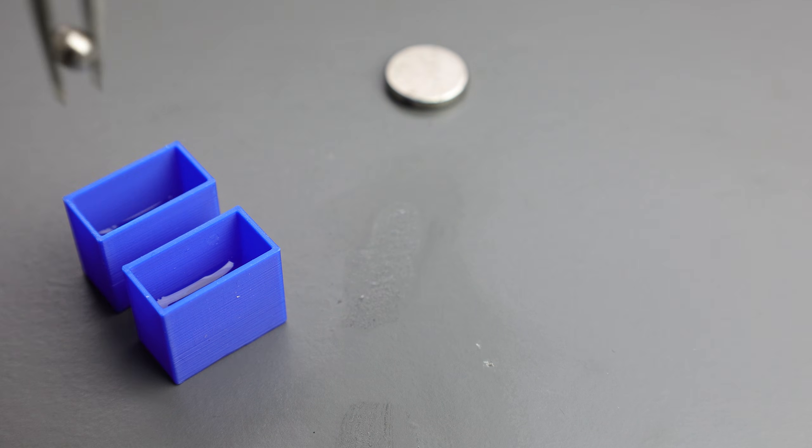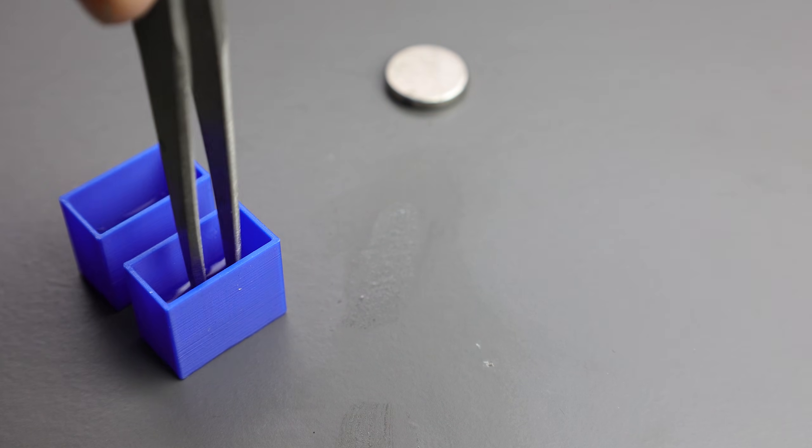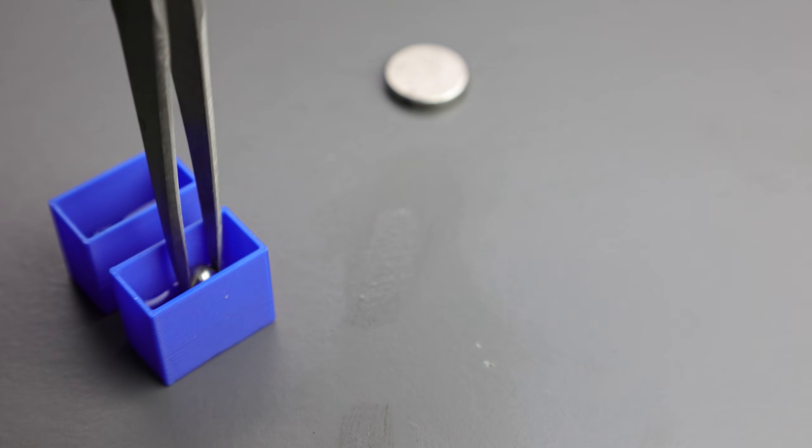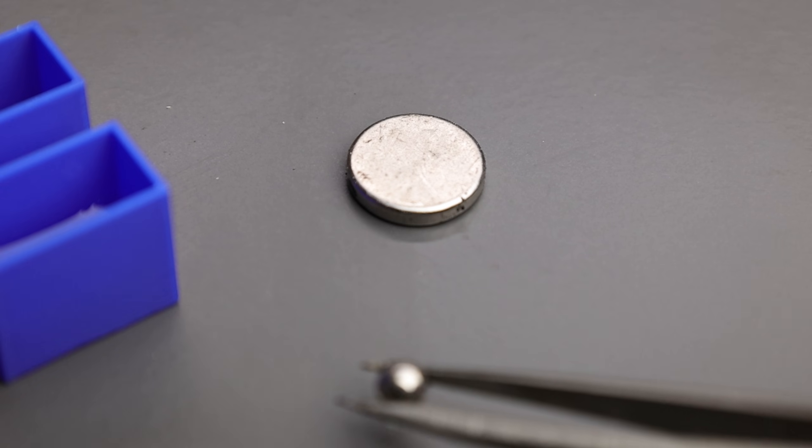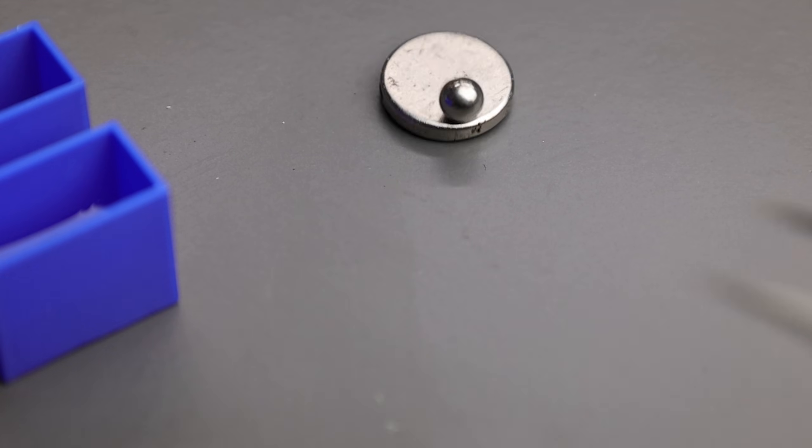This means that in a standard room, gadolinium is right on the edge of its magnetic identity. It is a material in a state of constant indecision. By manipulating just a few degrees of temperature, we can effectively flip a physical switch inside the metal itself.